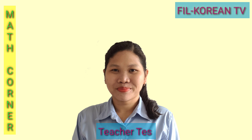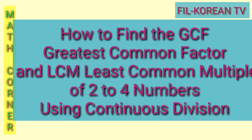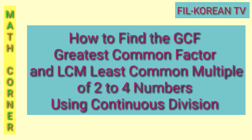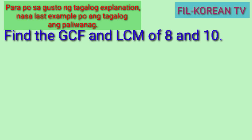Hi! Welcome to Feel Korean TV Math Corner. In this video, I will teach you how to find the GCF or Greatest Common Factor and the LCM or Least Common Multiple of 2 to 4 numbers using the Continuous Division Method. It is important for you to know how to get the GCF and LCM of numbers because these are used in solving fractions. So I decided to make this video for you to learn how to get the GCF and LCM of numbers using Continuous Division.